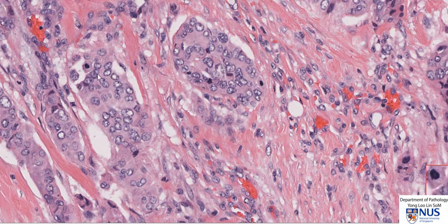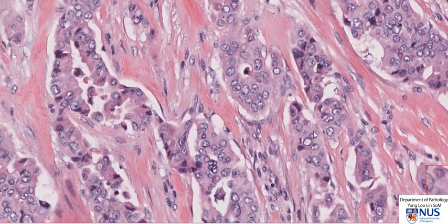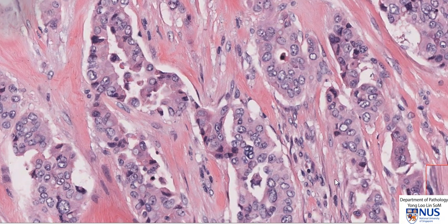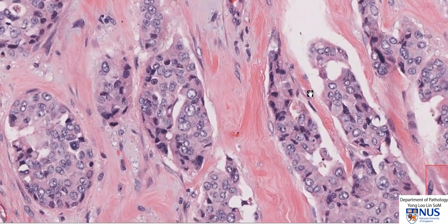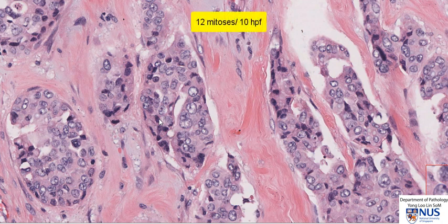For the third component, we count the number of mitoses in 10 consecutive high power fields. So there's one here, two, three, and four. Some figures I won't count as they are probably apoptotic. That's four in the first field. Moving to the next high power field, it's four in field two and five in field two. Moving to the next field — six in field three — and so on until completing 10 high power fields. In this particular case, it was 12 mitotic figures in 10 high power fields.